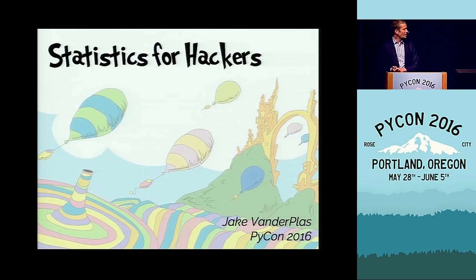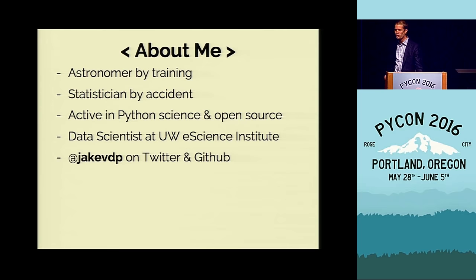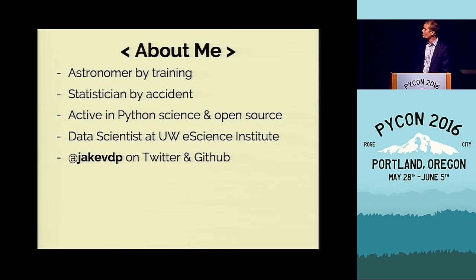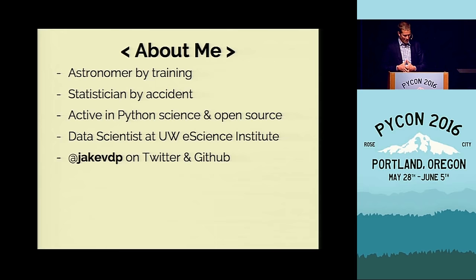Today I want to talk to you a little bit about statistics for hackers. I'm an astronomer by training. I like to say I'm a statistician by accident, because in astronomy we work with data, and anyone who works with data ends up by default working in statistics. I'm active in the Python science and open source community — I contribute a lot to scikit-learn and scipy. You can find me as JakeVDP on Twitter and GitHub.